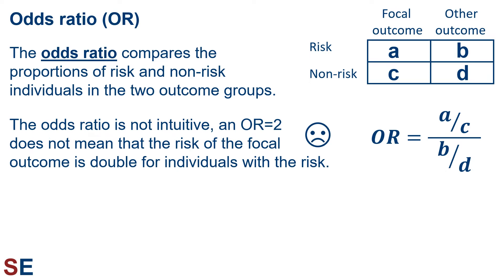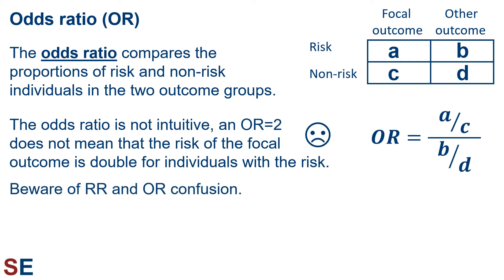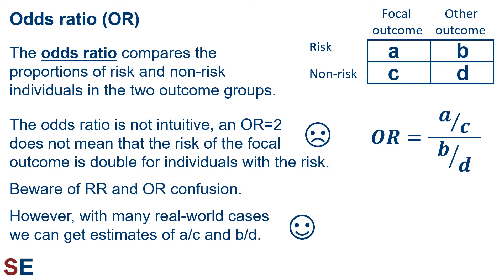Unfortunately, the odds ratio is not intuitive. An OR of 2 does not mean that the risk of the focal outcome is double for individuals with the risk factor. The general concept that an OR value greater than 1 indicates more of the focal outcome, and less than 1 indicates less of the focal outcome is true, but the exact value can be very misleading. Despite the big difference between the meaning of the odds ratio value and the relative risk value, they're constantly confused with each other, even by working professionals. The reason why we use such an awkward statistic is because with many real-world cases, we can get estimates of the fractions A/C and B/D by measuring the ratio of risky and non-risky behaviors in a sample of our focal outcome individuals and using a baseline ratio for the general population for the other outcome. This is done a lot in epidemiology and public health studies.